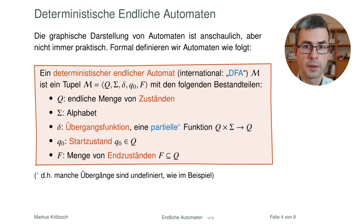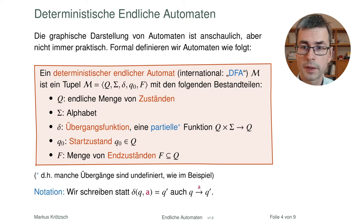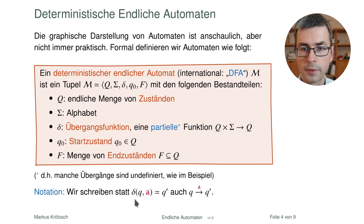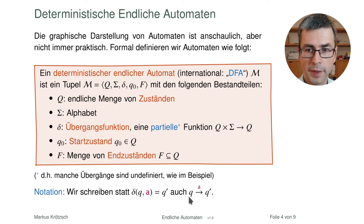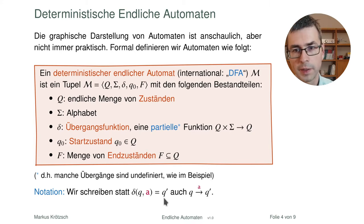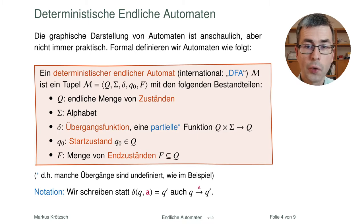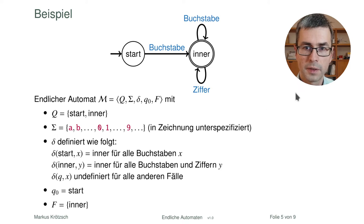Das ist also die Definition von deterministischen endlichen Automaten. Vorher möchte ich noch eine Kurzschreibweise erwähnen: Statt δ(q, a) = q' schreiben wir manchmal einfach einen Pfeil und sagen, q geht mit a nach q' über. Wenn wir wissen, von welchem δ wir sprechen, ist es oft etwas bequemer, das so darzustellen.